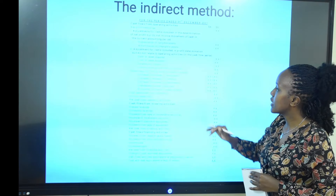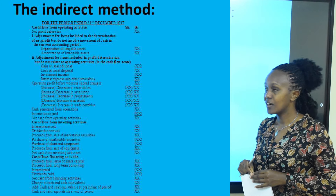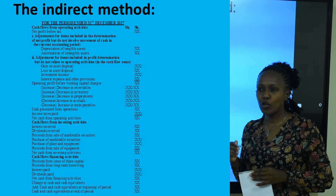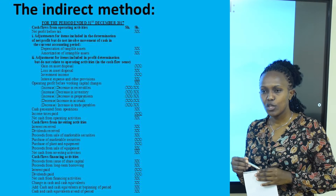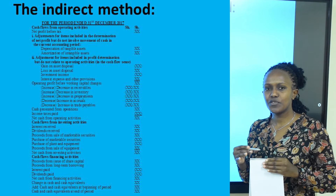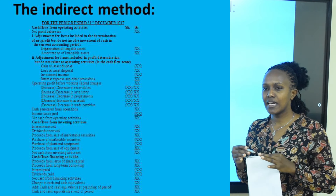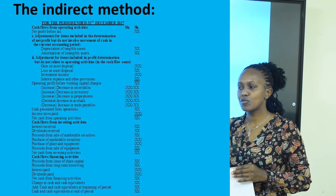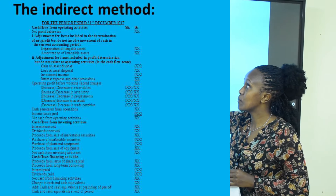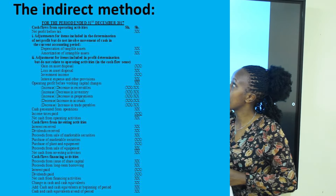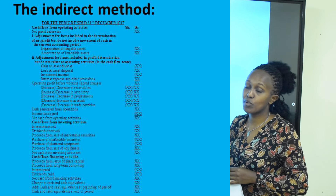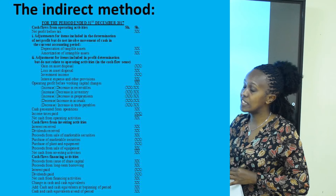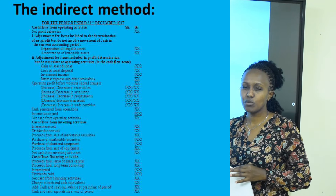Having said that, we can look at the format. We are going to use the indirect format. When preparing a cash flow statement using the indirect format, you want to see exactly why there is a difference between cash and profit. We are trying to reconcile the net profit we got — which represents the excess money after paying for operations — with the real cash in the organization. We start by identifying the cash from operations, beginning with the net profit before tax.